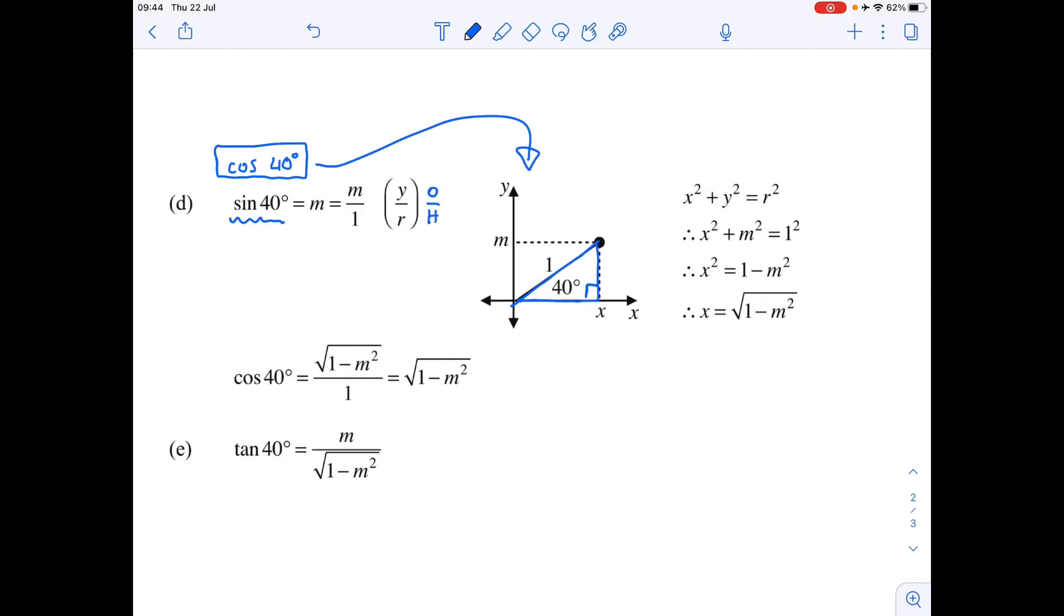So my opposite is going to be m. My hypotenuse is 1 and we need to work out what x is, or we need to work out what the adjacent is. So using Pythagoras, x squared is going to be the longest side squared minus the other side squared, square rooted. Therefore x is just going to be the square root of 1 minus m squared. And that's exactly what they've done over here.